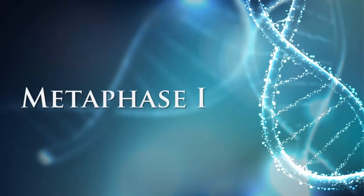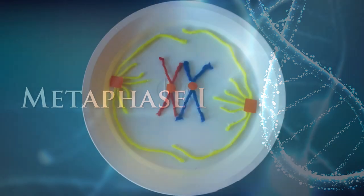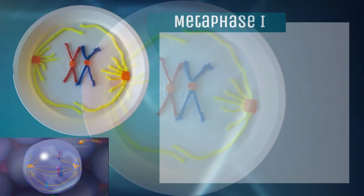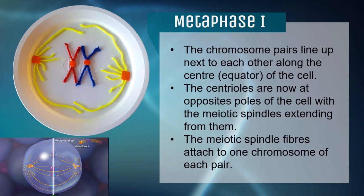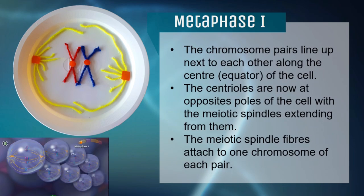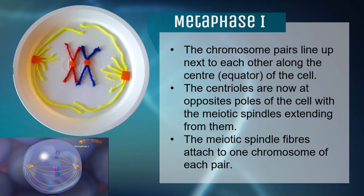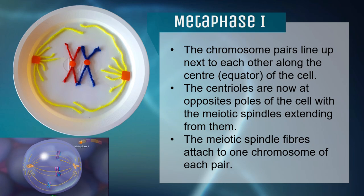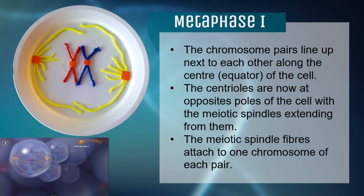Then we go into the second stage, Metaphase I. Here we have our model for Metaphase I. After the centrioles reach their destination and the membranes around the nucleus disintegrate, the chromosome pairs which have completed recombination and crossing over line up next to each other along the center. After that, the meiotic spindle extends and attaches to one chromosome of each pair.